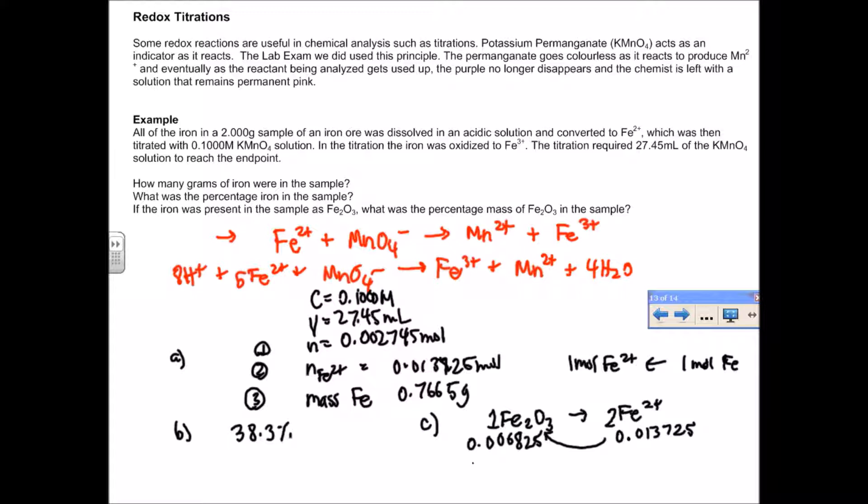If we find the mass, then it's 1.0959, and the percent in the 2-gram sample is 54.8%. The percent of pure iron in that sample is 38.3%, and the percent of Fe₂O₃ is 54.8%. That's how you do that distinction. This concludes our lesson in the basics of redox reactions and the stoichiometry and balancing of the reactions.